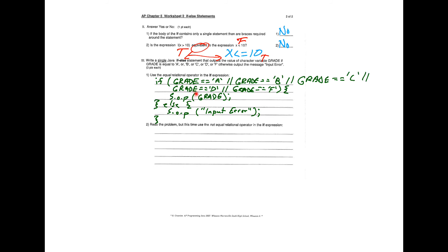Note: s.o.p is shorthand for System.out.println — this won't compile as written, so write it out fully on the AP exam and coding assignments. The second version of this statement uses De Morgan's: grade != 'A' && grade != 'B' && grade != 'C' && grade != 'D' && grade != 'F' — then print 'input error'; else print grade. It's essentially the same logic reversed.